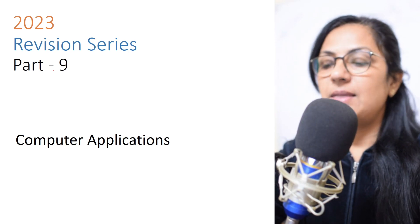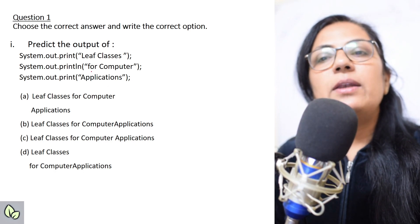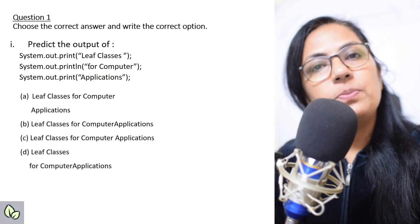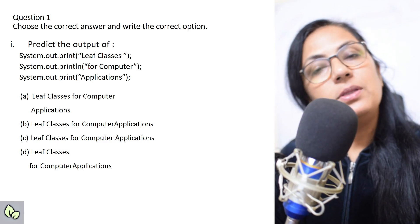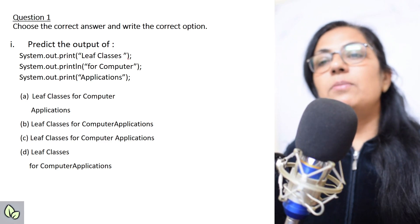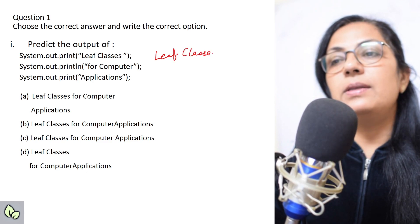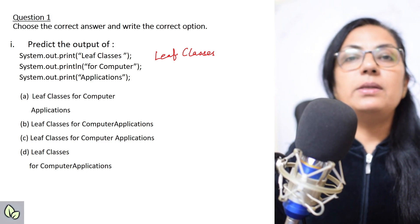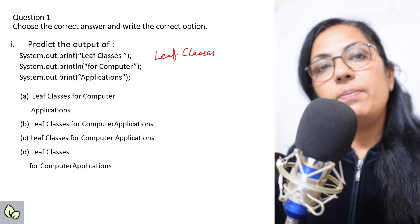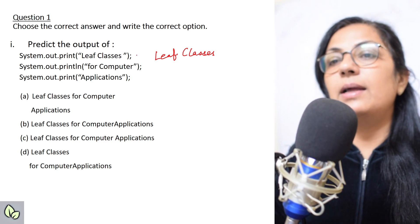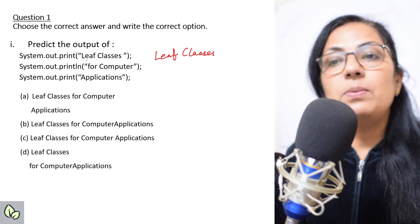We start with our first question: predict the output. I have already told you that for predict-the-output questions, first always predict the output yourself, and after that only check the options. If your answer matches with any option, that means that answer is correct. So: System.out.println("leave classes") — the print statement will print exactly in the same case. Always take care of uppercase and lowercase characters. After that there is a space, and on the next line a println statement.